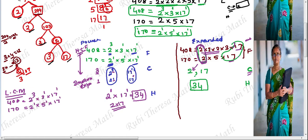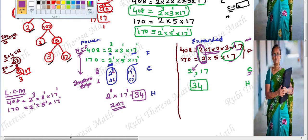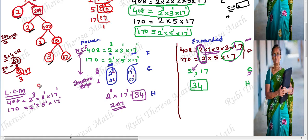For LCM, we take all numbers into consideration. If there are two occurrences of a factor, we choose the greatest exponent. For factor 2: we have 2 power 3 and 2 power 1 — which is the greatest exponent? 3 is the greatest exponent, so we choose 2 power 3.